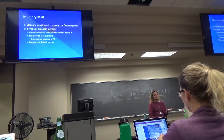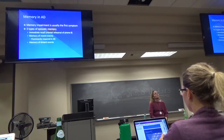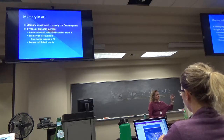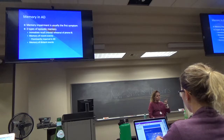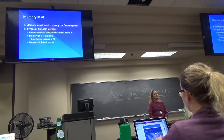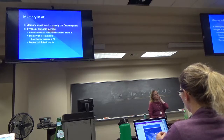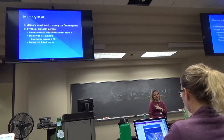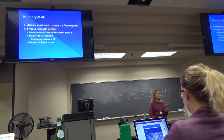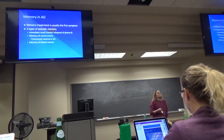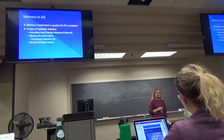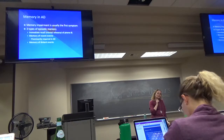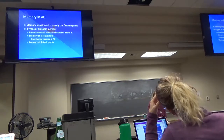The first thing lost is usually their memory. There are three types: immediate recall, like memorizing a phone number while you enter it; memory of recent events, like what you had for breakfast; and memory of distant events, like where you lived when you were young. The memory of recent events is the one that is more prominently impaired earlier on.